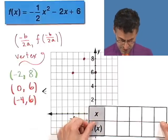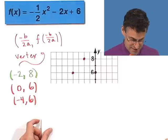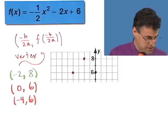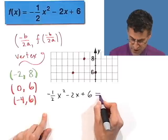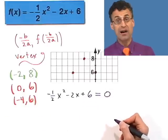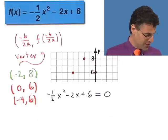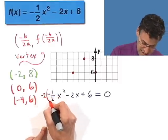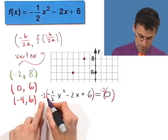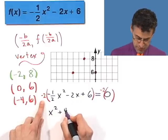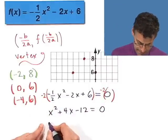We should find the x-intercepts — that's where the excitement is. We know there are two of them. We set negative one-half x squared minus 2x plus 6 equal to 0. I'm freaked out by that one-half and the negative sign, so let's multiply everything through by negative 2 to get nice integers. Negative 2 times negative one-half gives 1, so we get x squared plus 4x minus 12 equals 0. Let's factor.